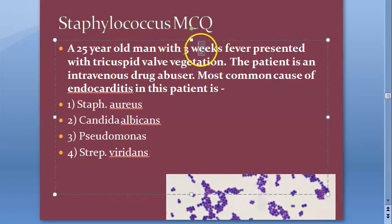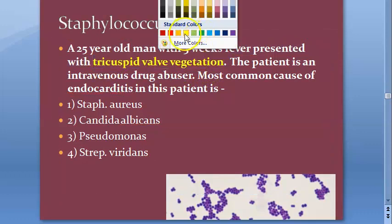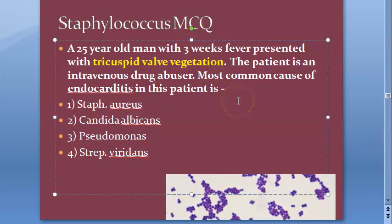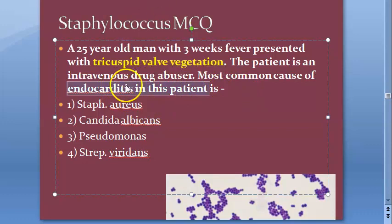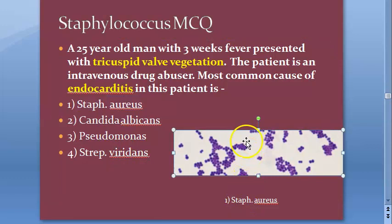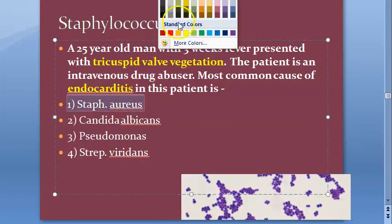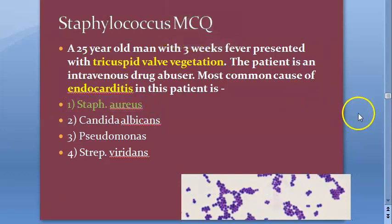A 25-year-old man with 3 weeks of fever presented with tricuspid valve vegetation. The patient is an intravenous drug abuser. Most common cause of endocarditis in this patient? The answer is staphylococcus — staphylococcus causes endocarditis in IV drug abusers.